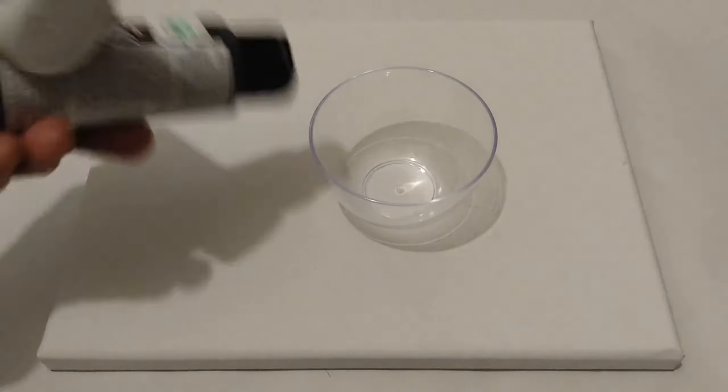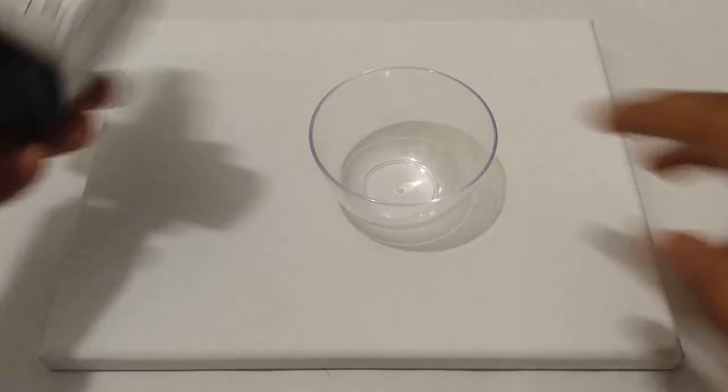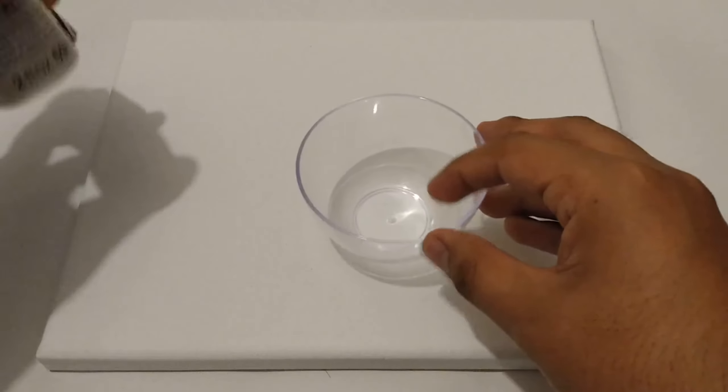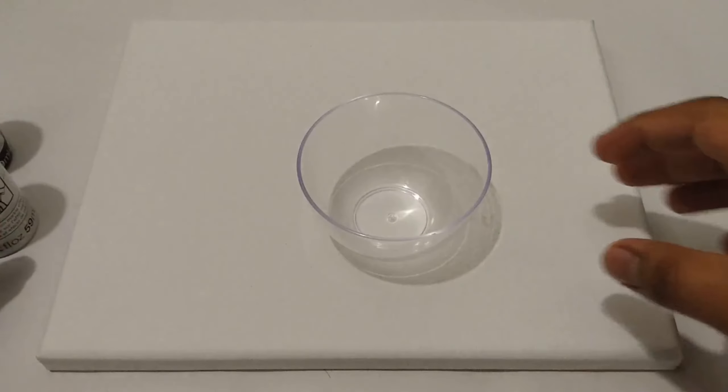The first thing I'm going to do is I'm going to be pouring these paints into this small bowl that I have here, and from there, I will be pouring the paint over this white canvas that I have here.